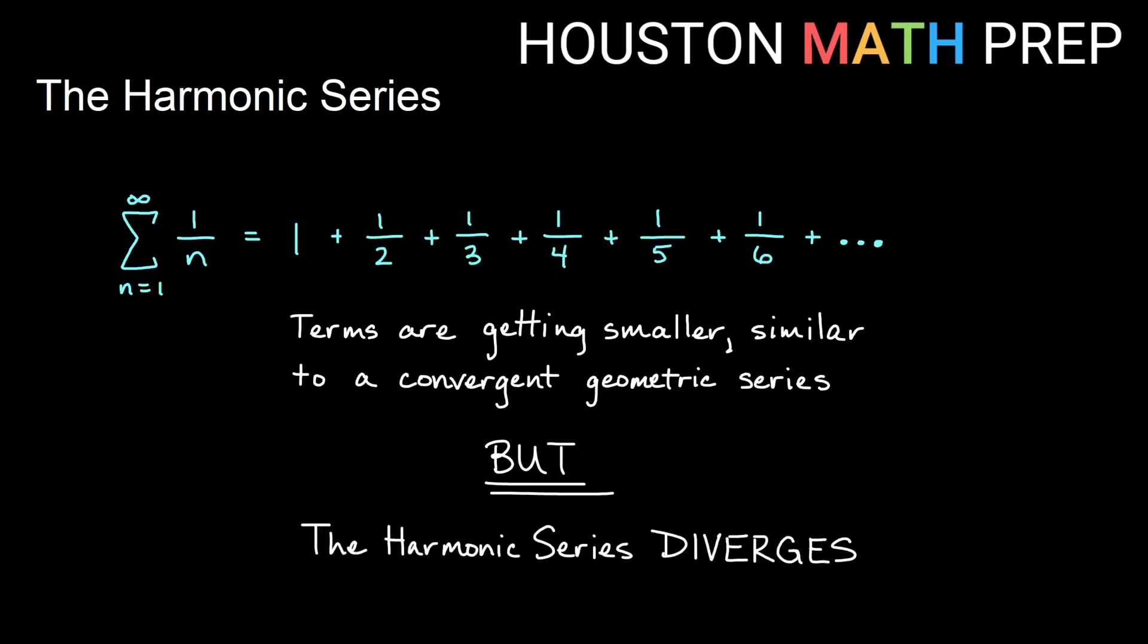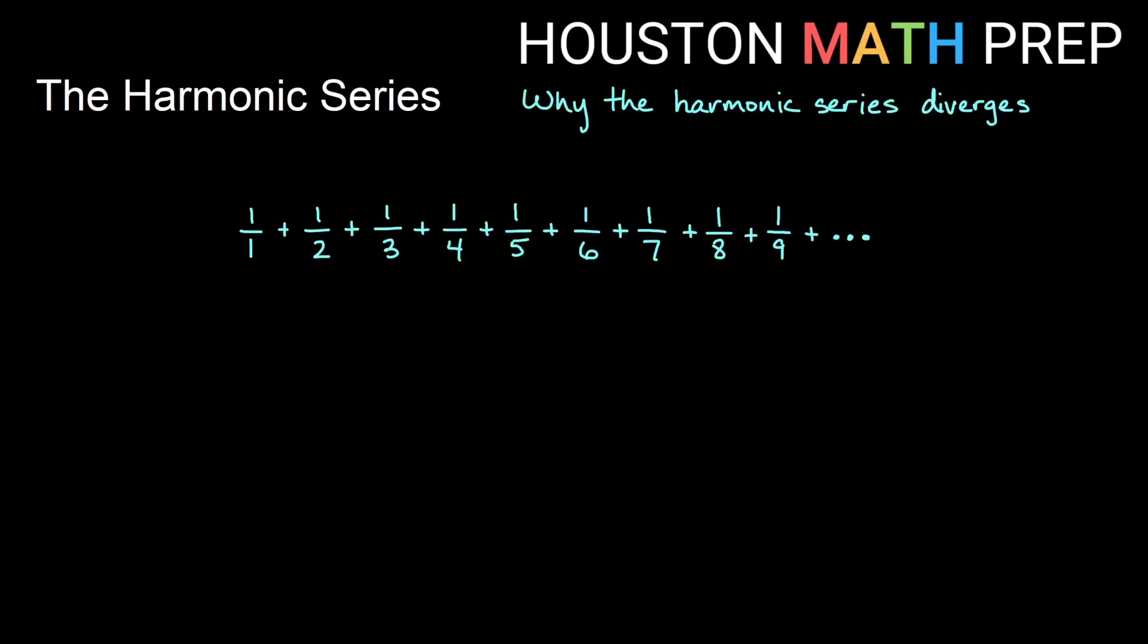We're going to take a look at why this happens, assuming that you haven't learned many of the tests for convergence or divergence yet. If we look at this infinite list of terms, we want to think about grouping the terms, and we're going to group according to powers of 2 in the denominator.